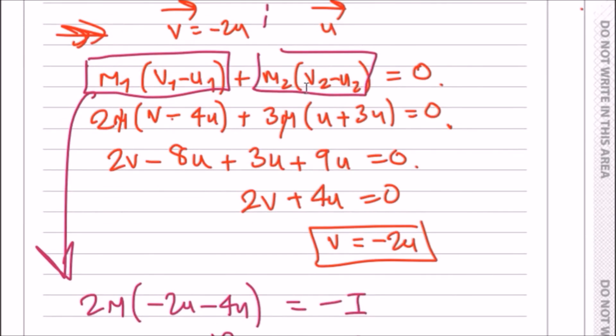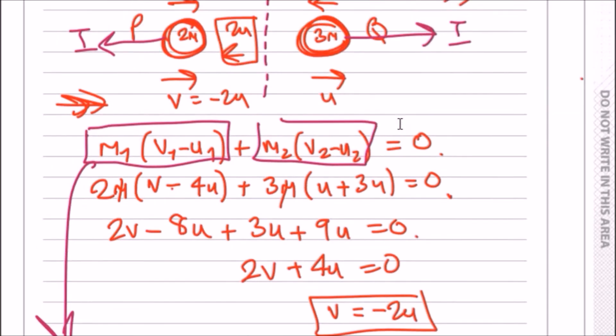Try for the right-hand side: you should get the same thing. Why? Because 3u plus 3u is 4u times 3 is 12, so again this one is also 12mu.